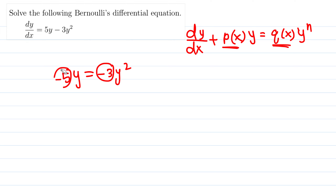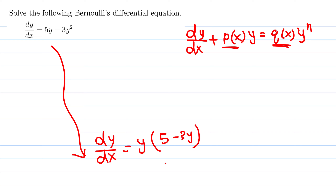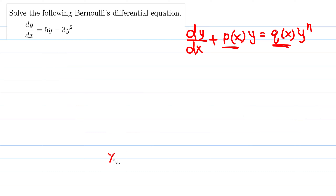Now we want to solve this Bernoulli equation. Interestingly, this one is also separable — I can factor y out to get dy/dx equals y times (5 minus 3y), then bring everything to the left: 1 over [y(5 minus 3y)] dy equals dx. We could separate variables and integrate using partial fraction decomposition, but I'm going to use the Bernoulli method instead.